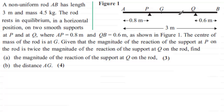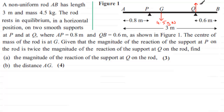We're told it's a non-uniform rod, so the weight of the rod will not act in the middle but at point G. The mass is 4.5 kilograms, so the weight acts downwards at G and equals 4.5G Newtons. I'll take G as 9.8 later. We have reactions at P and Q. The reaction at Q acts upwards — call it R Newtons — so the reaction at P is 2R Newtons, as we're told it's twice that.